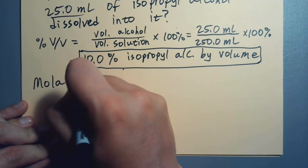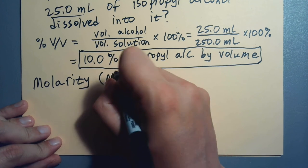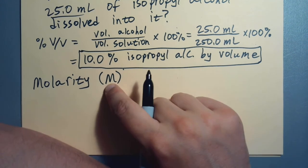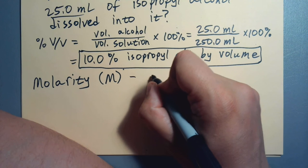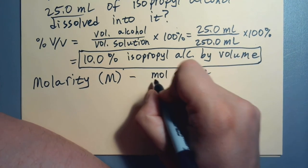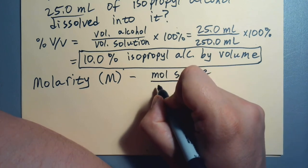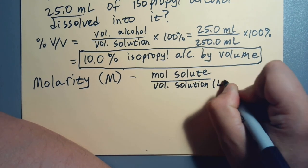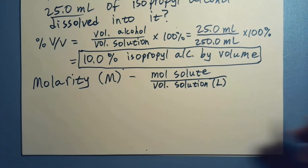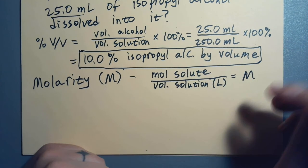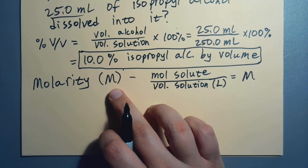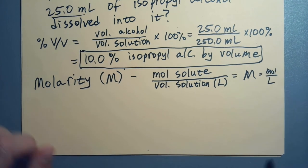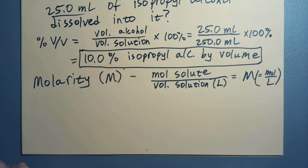So molarity is often abbreviated capital M. What this is is moles of solute. That's right, moles are back. Over volume of solution, and it's going to be in liters. So we're going to specify the unit of volume. No times 100%. That's going to give us our molarity. If you see a big capital M, it means moles per liter. That's going to be the unit. Moles over liters.